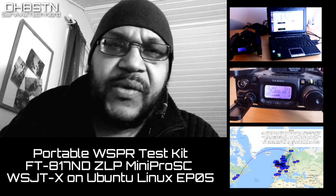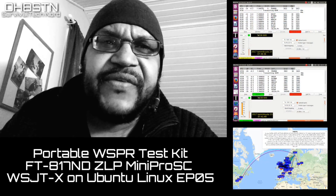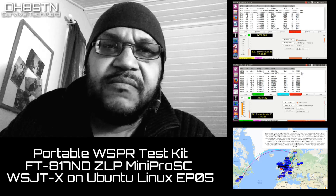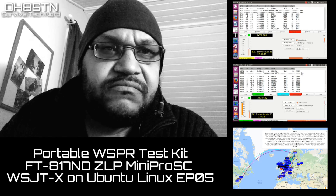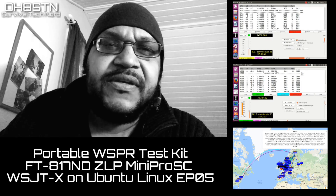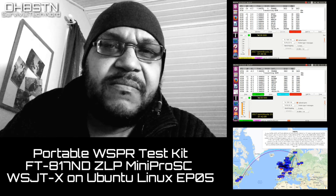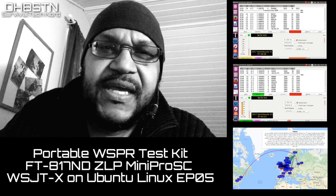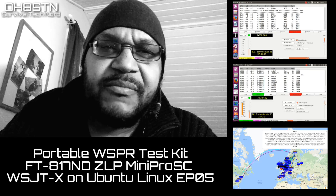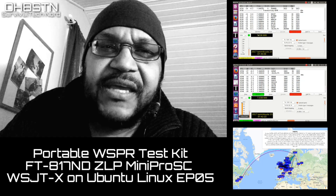Personally, and if you've followed the channel for a while, you know that I use WSPR as a means of comparing different configurations, different antennas, and different types of antennas to one another to see their effectiveness in my MAM portable field operations. Today we're going to take a look at the mobile WSPR testing environment and set up the FT817ND, the ZLP Mini Pro SC, and WSJTX on Ubuntu Linux. We're also going to take a look at some of the results and give you an idea of how this type of environment can be useful for you.